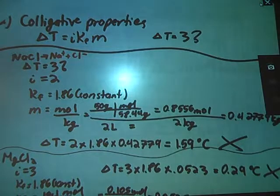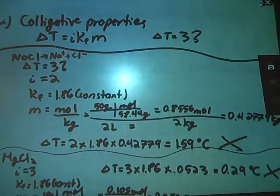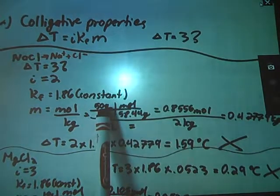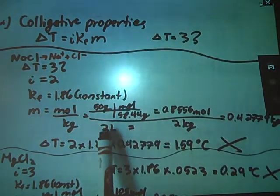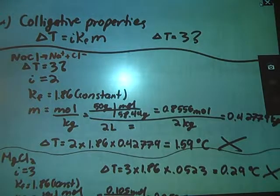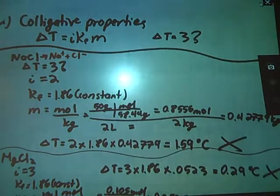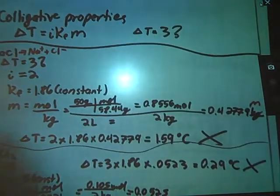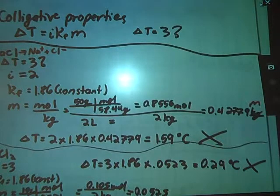Kf is a constant, 1.86. M, lowercase m stands for molality, which is moles per kilogram. So first thing I had to do was convert my 50 grams of sodium chloride into moles using the formula mass. I had 2 liter buckets, so I'm assuming you're filling up that bucket entirely. Since water has a density of 1, 2 liters equals 2 kilograms. That is the molality of my sodium chloride solution. So from there we just plug and chug.